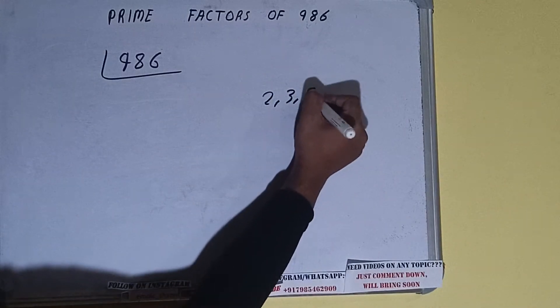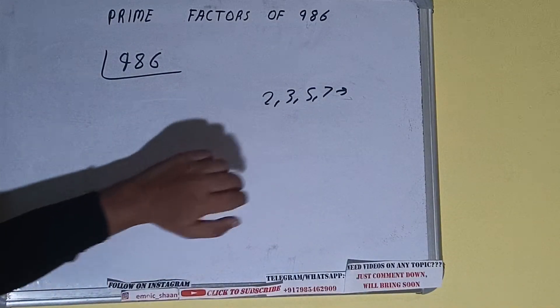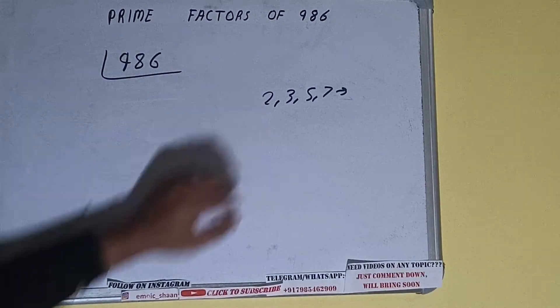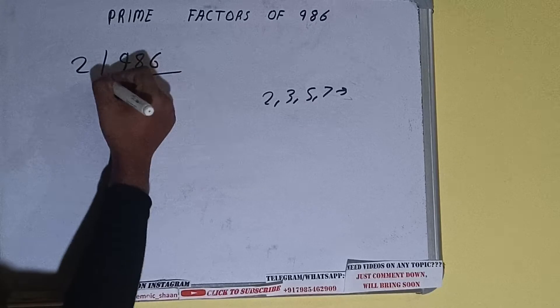So we'll check with the lowest prime number we have, that is two. Is the number 986 divisible by two? Yes, it is because the number is even and we'll be having 493. Is this 493 divisible by two? The answer is no because the number is odd.